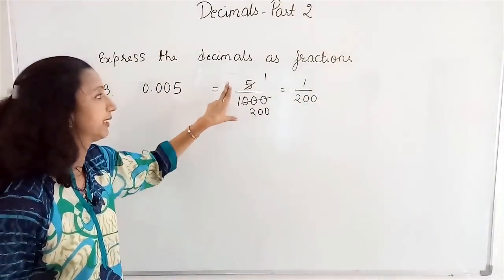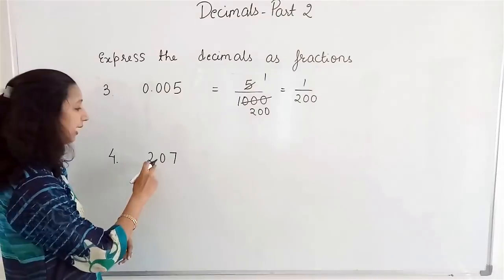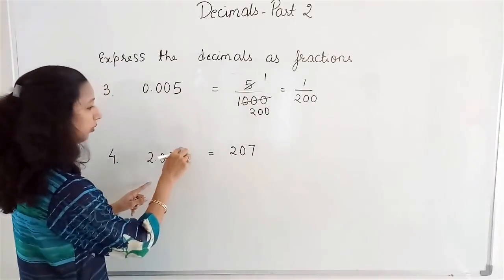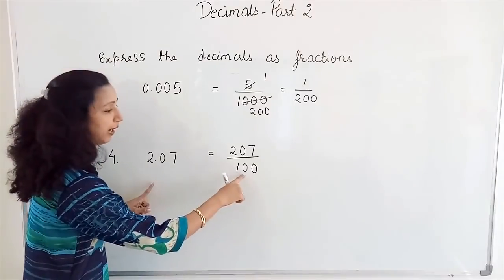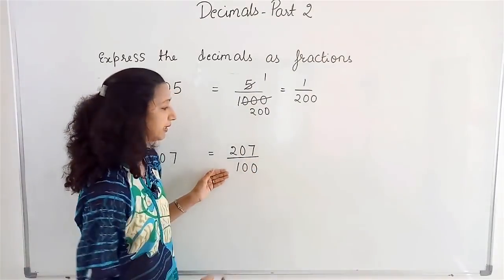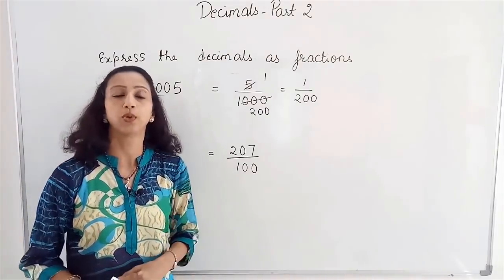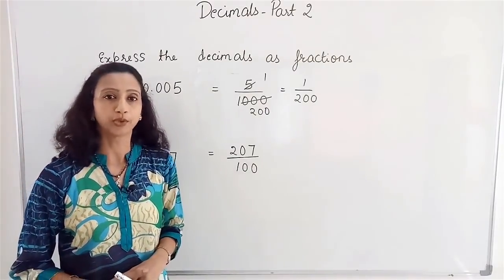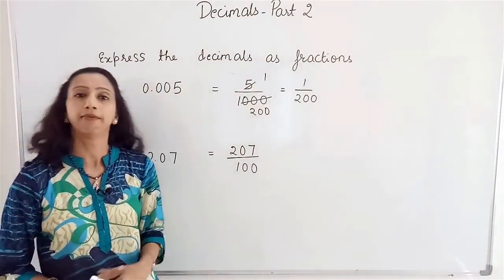So 0.005 equals 1 by 200 in lowest terms. For 2.07: it has two decimal places, so it is written as 207 by 100. Since 207 and 100 have no common factor, this cannot be reduced further and remains 207 by 100, which could be converted to a mixed fraction but we leave it as is.